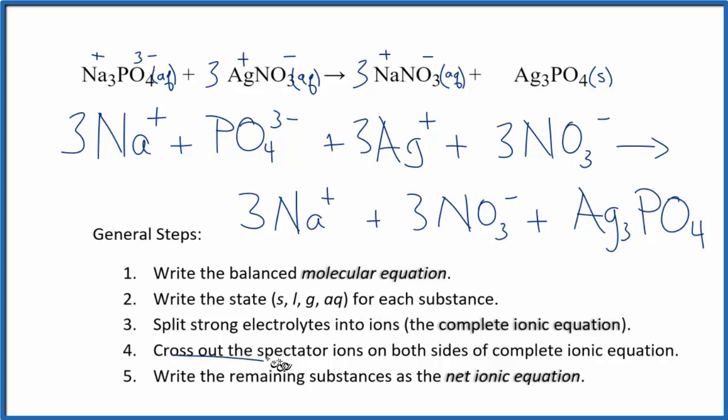Now we can cross out what are called spectator ions. They're on both sides, on the reactants and the products. So we're going to cross those out because really they haven't changed. We have three sodium ions here, and in the products, three sodium ions. We're not interested in those. We're interested in what changed. Looks like we have three nitrate ions in the reactants and three in the products. We can cross those out.